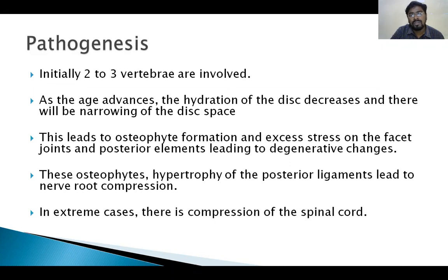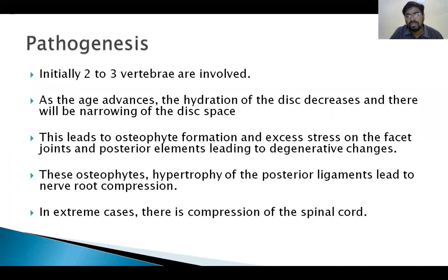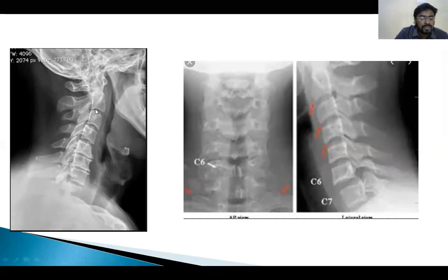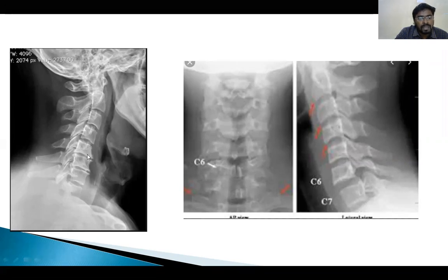Due to chronic hypertrophy and stress on the spine, the body develops bony protrusions called osteophytes as a compensatory mechanism. We can see in this X-ray: these are the normal vertebral bodies, this is the posterior arch, these are the facet joints — this is the inferior surface of the superior vertebra and the superior surface of the inferior vertebra forming the facet joint. We can see anterior bony projections — we call them osteophytes or bony spurs. We can also see narrowing of the intervertebral space at certain levels, with hypertrophy and sclerosis of the facet joints.